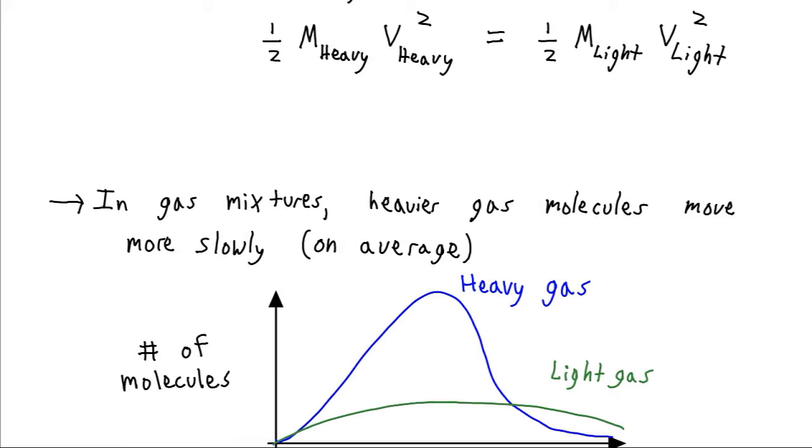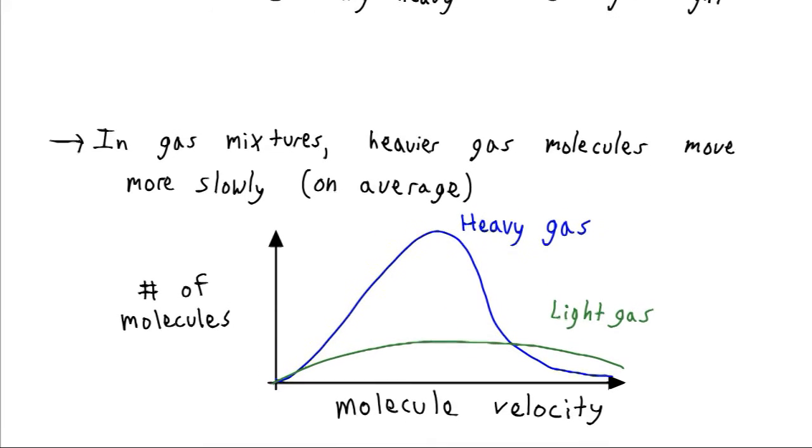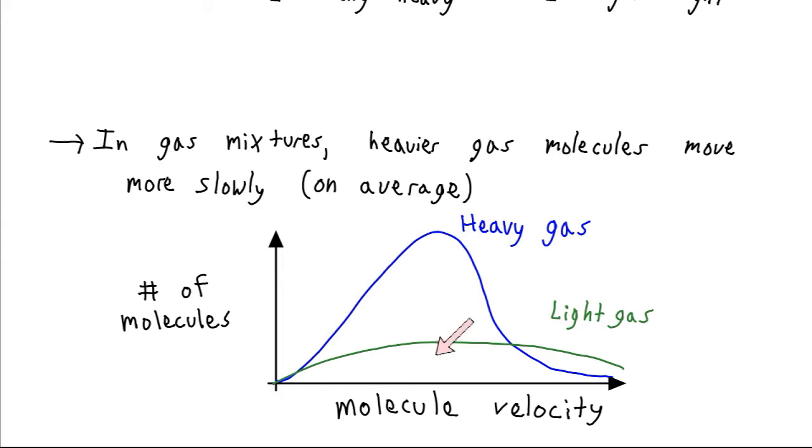The result is that in gas mixtures, heavier gas molecules are going to move more slowly on average than lighter gas molecules. And I say on average, we actually have a distribution of velocities. It has to do with all these random collisions that we're undergoing. For our heavy gas, we have some molecules moving pretty slowly, some moving relatively fast, but they center around this average. For our light gas, this distribution is spread out a lot more, so we have a higher fraction of gas molecules moving at relatively high velocities. So that's going to move the average out here.